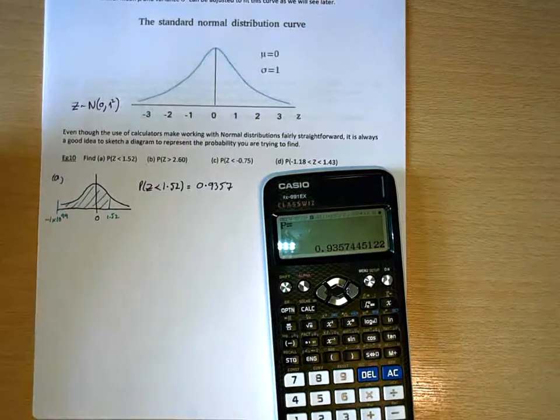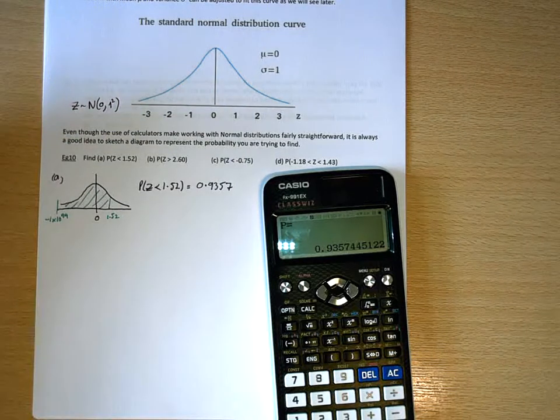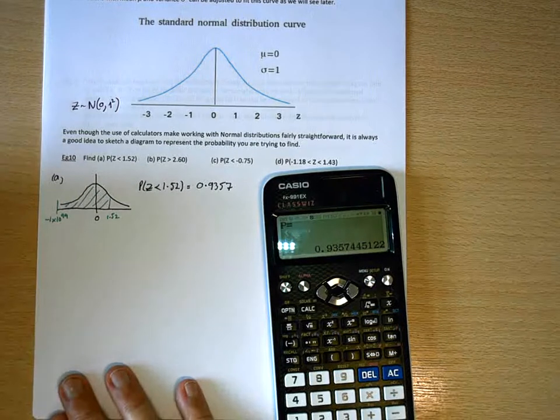So that's it. The probability for that distribution of selecting a number less than 1.52 is 93.5, or 93.6%.